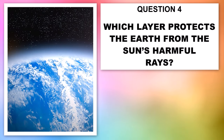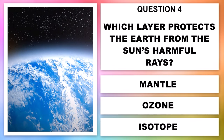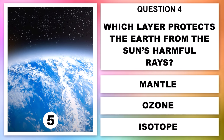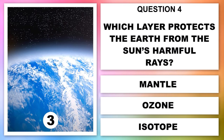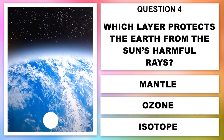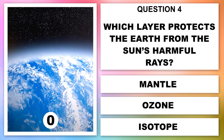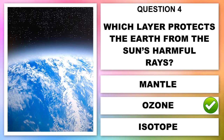Question 4. Which layer protects the earth from the sun's harmful rays? The mantle, the ozone or the isotope? The ozone layer.